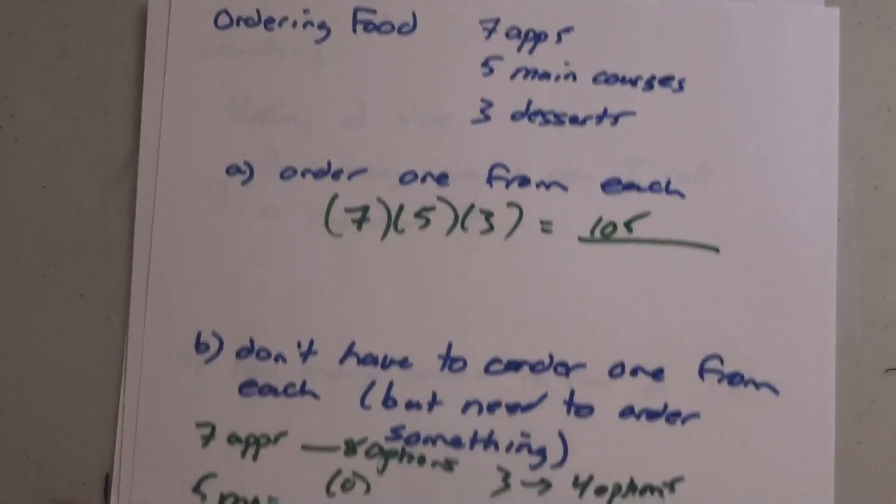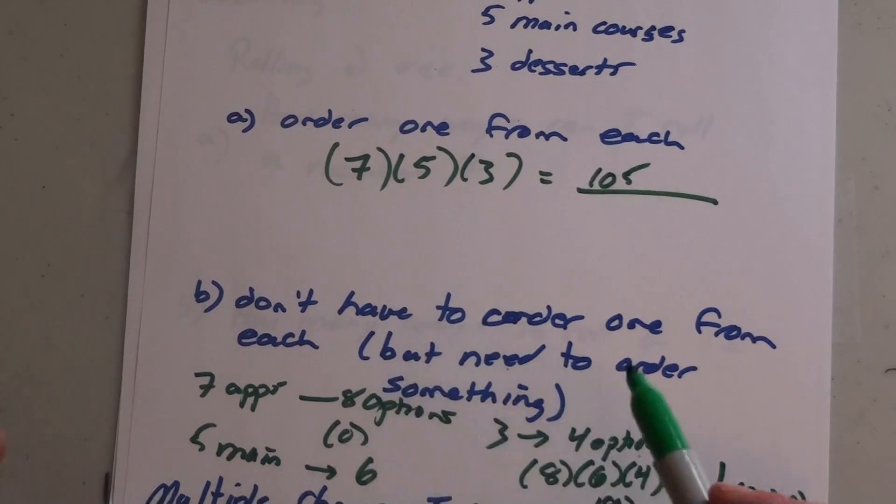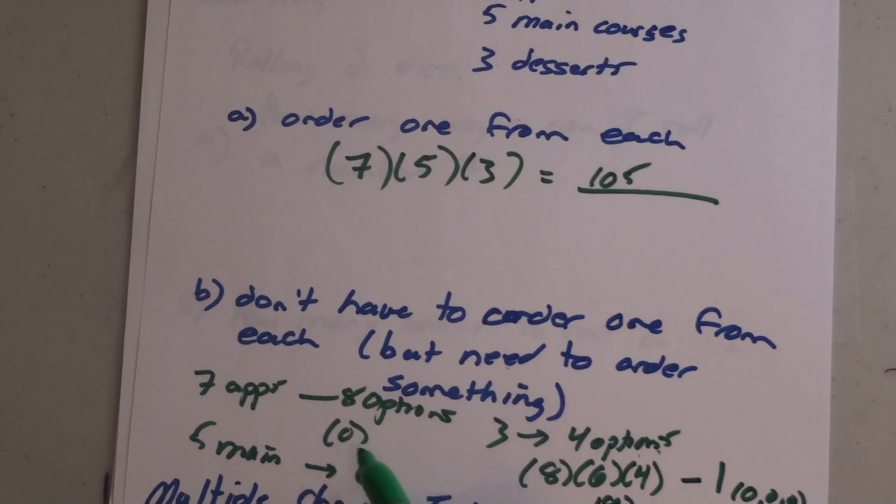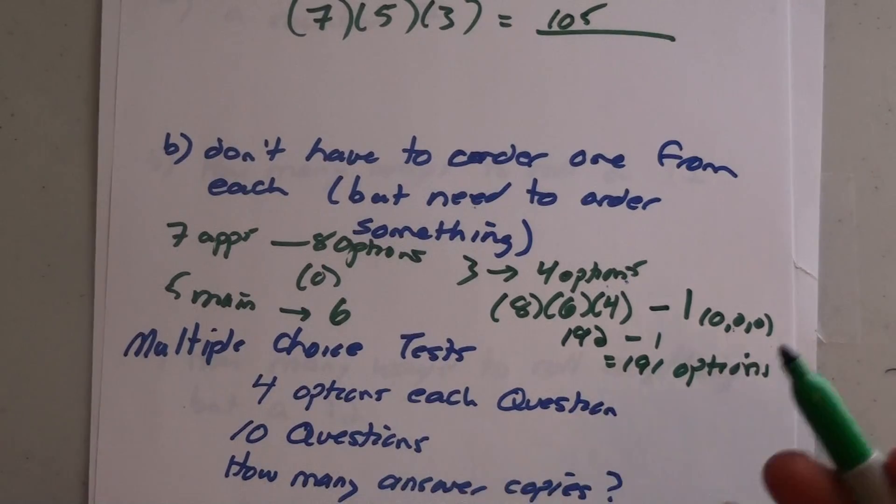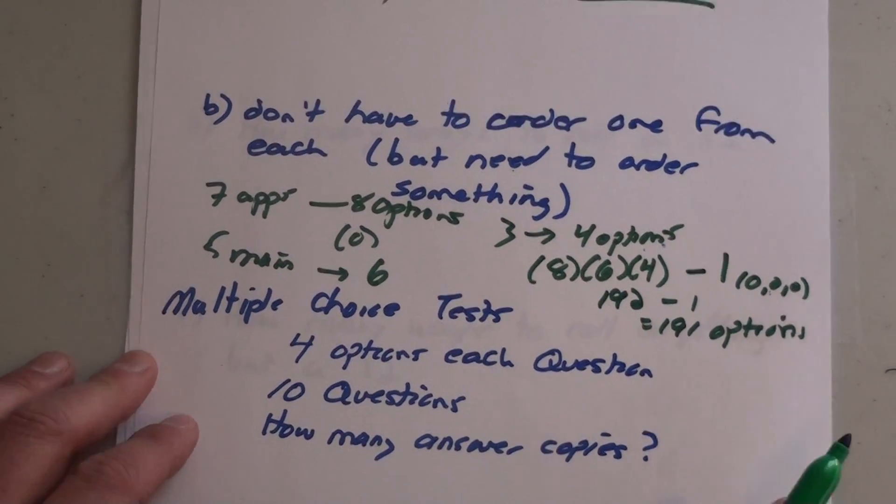So when you need to order something but you don't have to have one of each, you can actually put in the zero option for each, which increases the options by one. Then you have to subtract away the zero-zero-zero option at the end because you do have to order something.